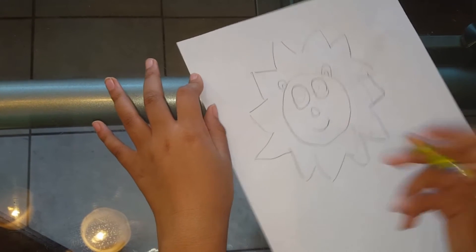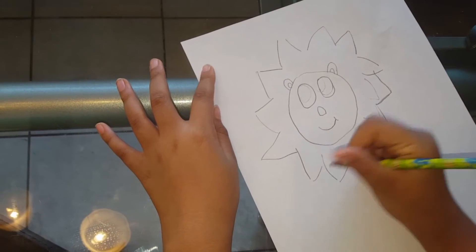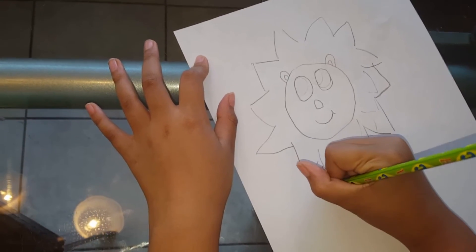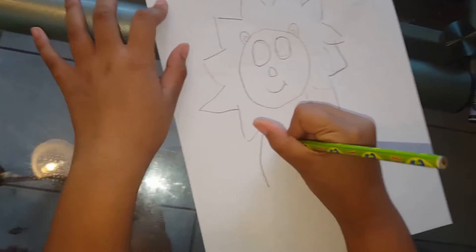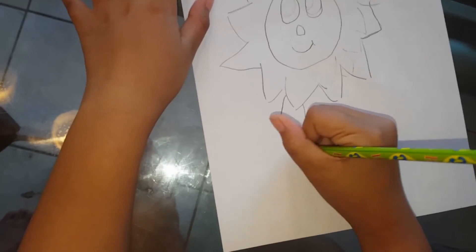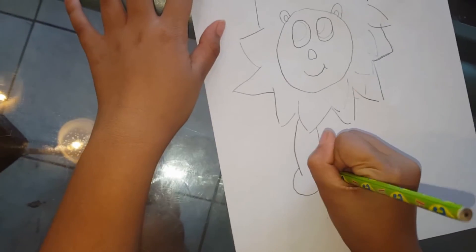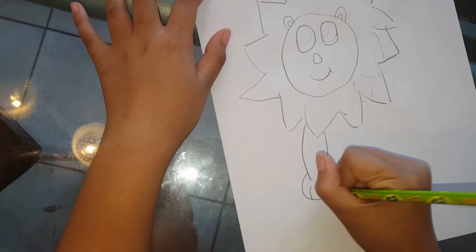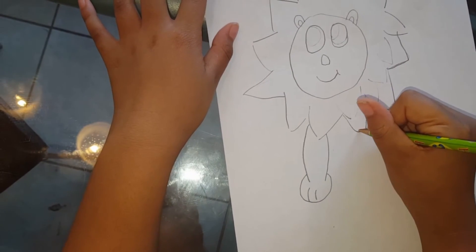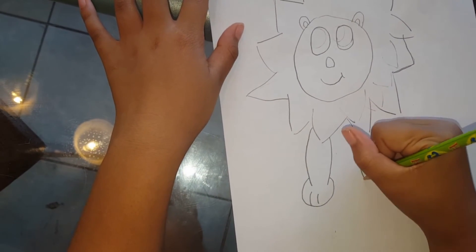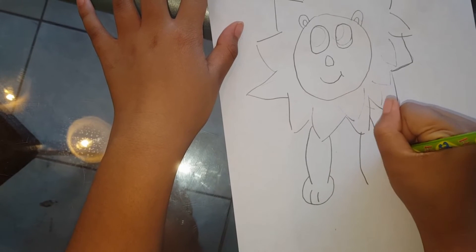Now we're going to go with some legs. So I like to draw mine kind of chubby, but you can draw however you want. After you're done with drawing that part, you want to draw a circle. And then draw two lines in the middle for the paws. Do the same with both of the legs.